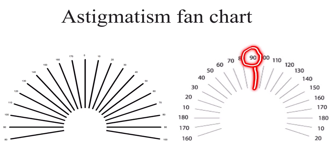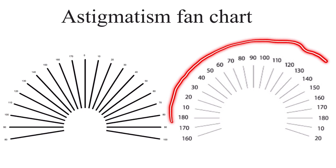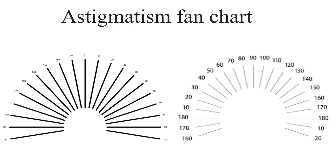As we know, in optometry, we have the axis written anti-clockwise, even in our trial frame. But in the case of the astigmatic chart, it is written clockwise. The reason these lines are written clockwise is because it is from the vision perspective, not the examiner's perspective.